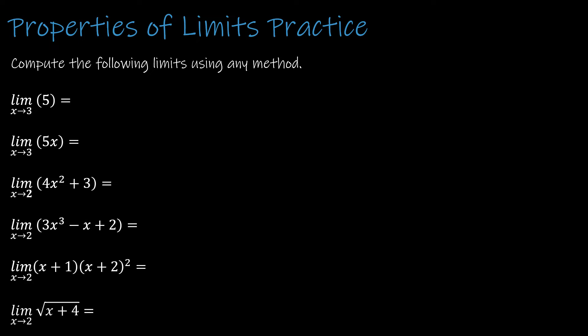Here's some practice for you to do on your own — press pause and try all of this, and when you're ready, press play to see how you did. The limit as x approaches 3 of 5 is just a constant, so it's always going to be 5. The limit as x approaches 3 of 5x: using a property, that's 5 times the limit as x approaches 3 of x, or just direct substitution — 5 times 3 is 15. Either way you do it, you get 15.